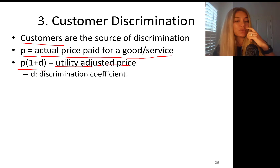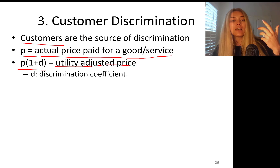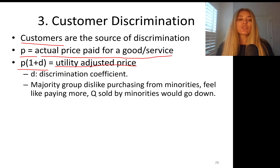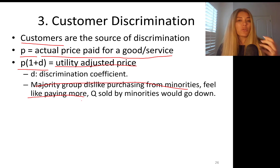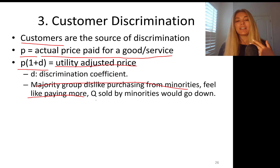D is the utility-adjusted price discrimination coefficient that adjusts your price. In this example, the majority group dislikes purchasing from minorities — they feel like they're paying more. They paid P dollars, but felt like they paid more. This is the modeling.